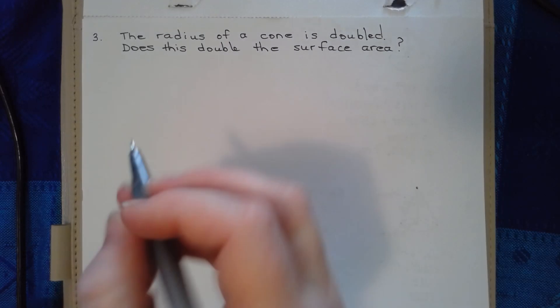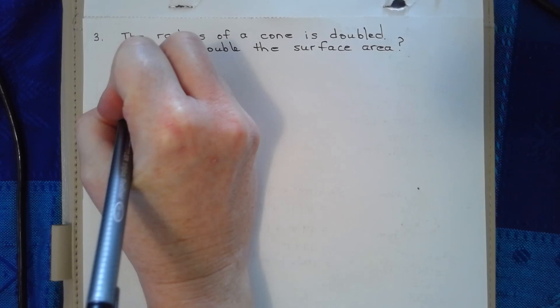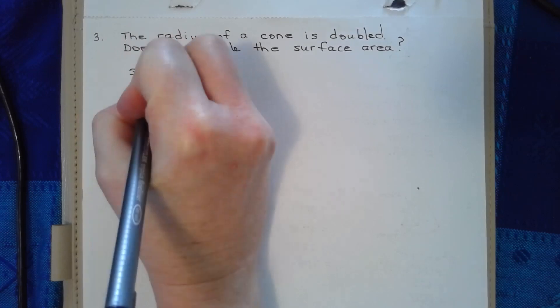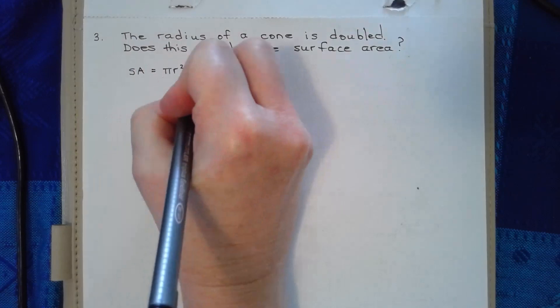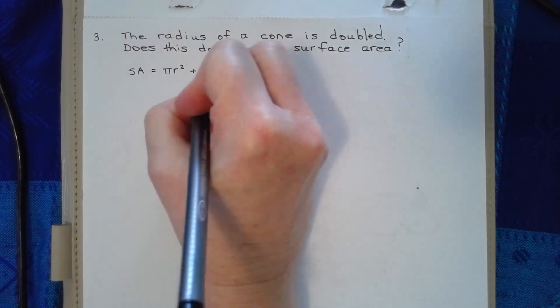Let's remember that we have a formula. We know that the surface area of a cone is equal to the area of the base, which is pi r squared, plus the area of the lateral surface, which is pi r s.